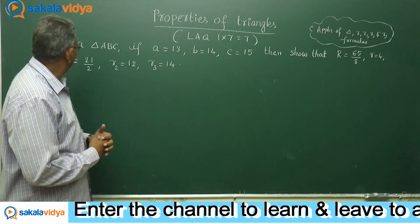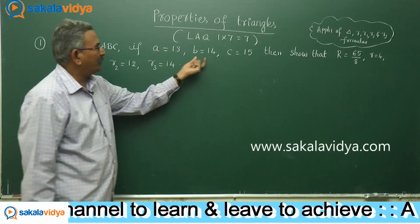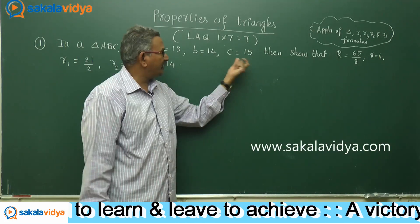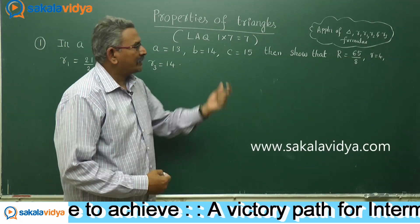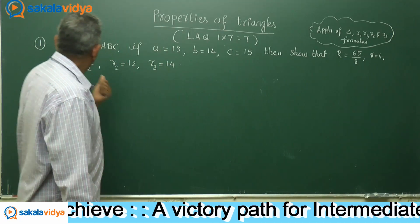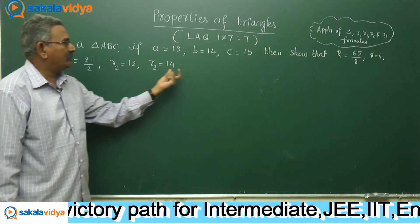Let me read the question first. In a triangle ABC, if small a is equal to 13, small b is equal to 14, small c is equal to 15, then show that capital R is equal to 65 by 8, small r is equal to 4 and r1 is equal to 21 by 2, r2 is equal to 12, r3 is equal to 14.